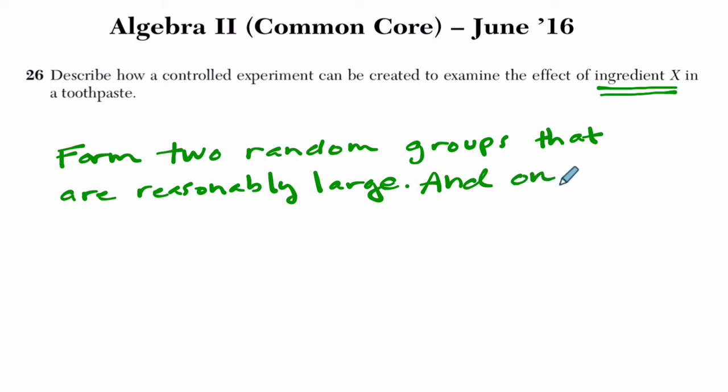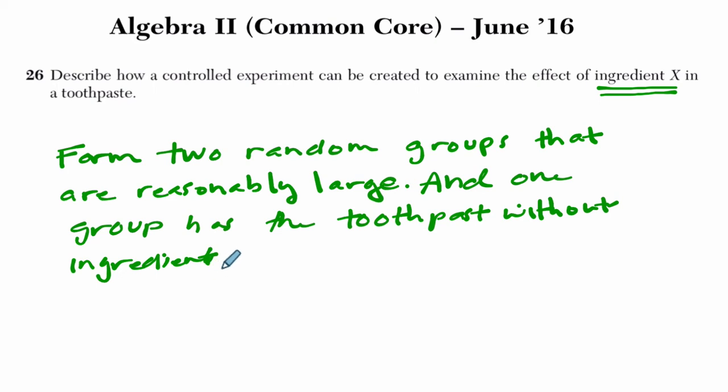And one group just has regular toothpaste without the ingredient. So one group has the toothpaste without ingredient X. This is your control group. Now you could say it's the control group, you wouldn't lose credit for that, but you don't need to.